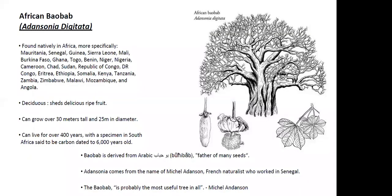The African baobab itself is found natively in Africa, and it has a very delicious fruit that a lot of people eat in Africa. It can grow over 30 meters tall, 25 meters in diameter — it's a very, very large tree. It can live over 400 years, and there was said to have been a specimen found in South Africa that was carbon dated to 6,000 years old. The baobab itself is derived from the Arabic name bohibab, meaning father of many seeds. It was named after Michel Adanson, a French naturalist who worked in Senegal, who also said that the baobab is probably the most useful tree of all.